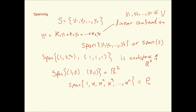By taking linear combinations of 1 and x, you can produce any vector in P1. Similarly, if you take 1, x, and x², you could produce any vector in P2 — any quadratic is simply a combination of the constant, x, and x². So the span of these vectors is, in fact, Pn.